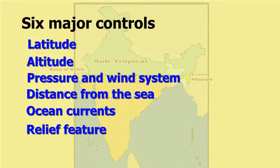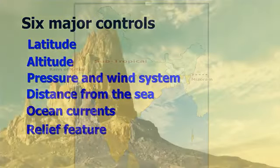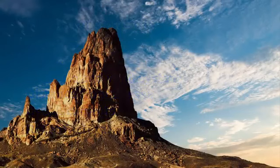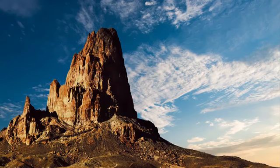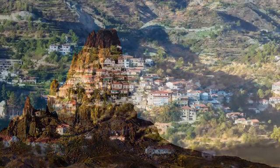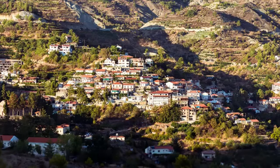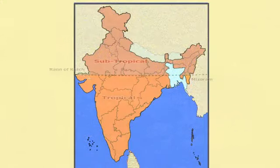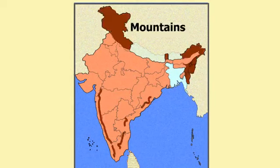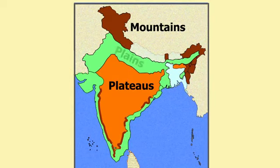The second factor is altitude. There is a decrease of one degree Celsius for every 166 metres rise in height. As one goes from the surface of the earth to higher altitudes, the atmosphere becomes less dense and the temperature decreases, which is why the hills are cooler during summers. India is covered by different landforms — mountains, plains, and plateaus — which result in differences in temperature.